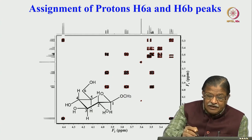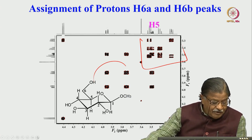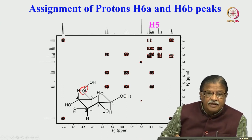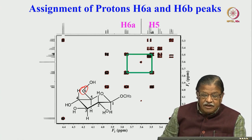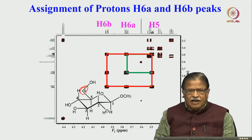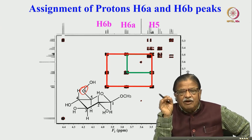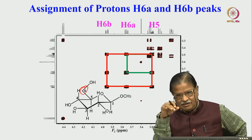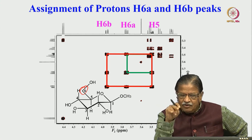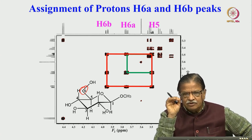Now H6 and other things are here. We expanded up to H5. Now H5 is known. From H5, what are the two possibilities? H5 is coupled to two protons at H6, which has two protons. Come here and complete — this one is H6a, another one H6b. Why H6a and H6b? Axial and equatorial — you have to assign based on coupling strength. Always remember: axial-axial coupling is larger, axial-equatorial coupling is smaller, and equatorial-equatorial coupling is even smaller. Look at the multiplicity pattern to see which coupling is larger, and from that you can determine whether it is the axial or equatorial proton and make the assignment.